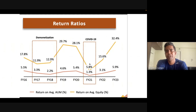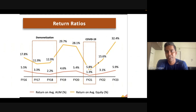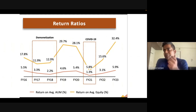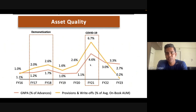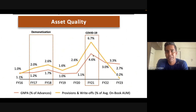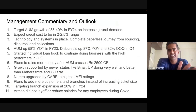When demonetization came and COVID came, everybody had to provide more for asset quality, which brings the ROE number down — but look at the recovery as well. If a company can handle demonetization and COVID very well, I'm confident about its future. The asset quality worsened during demonetization and again during COVID, but look at the drastic recovery right after COVID — that shows the structural and sustainable nature of Arman Financials' business model.